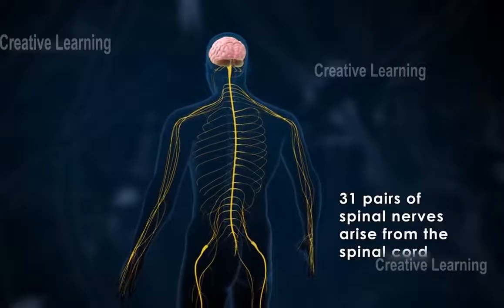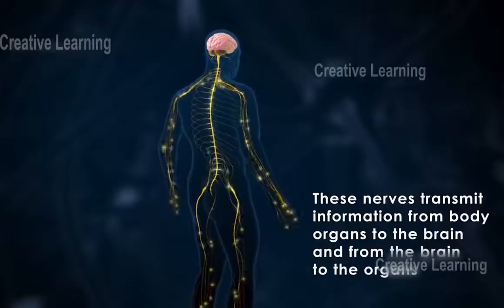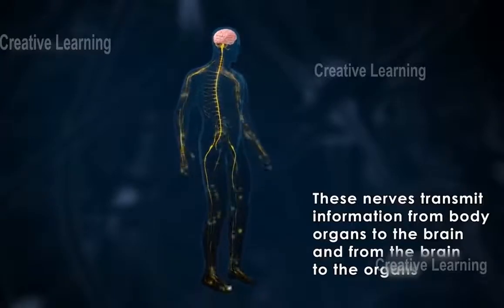31 pairs of spinal nerves arise from the spinal cord. These nerves transmit information from body organs to the brain and from the brain to the organs.